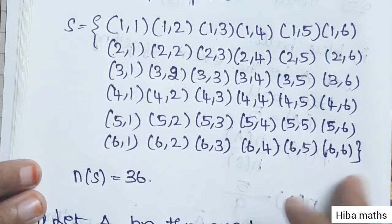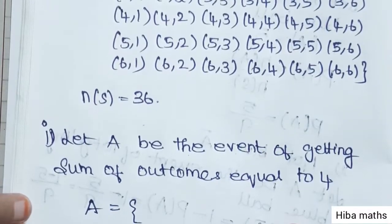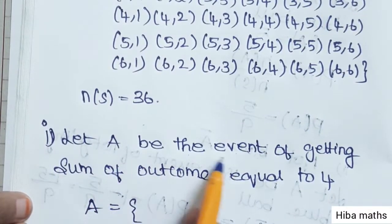The total number of outcomes is 36, so n(S) = 36.